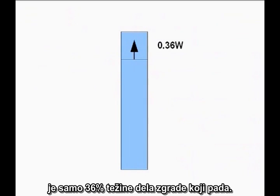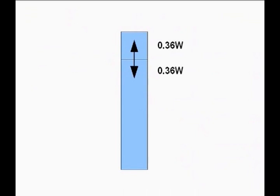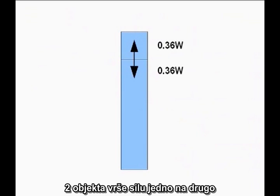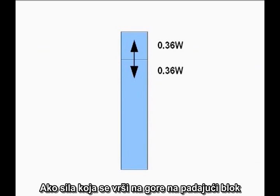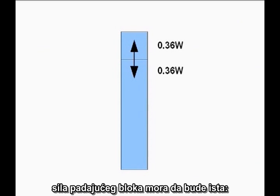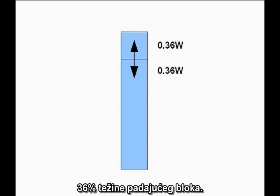So far, so good. But now turn it around. Newton's Third Law says interactions between objects work both ways — the forces two objects exert on each other are always equal and opposite. If the upward force acting on the falling block is 36 percent of the weight of the falling block, the downward force exerted by the falling block must be exactly the same: 36 percent of the weight of the falling block.